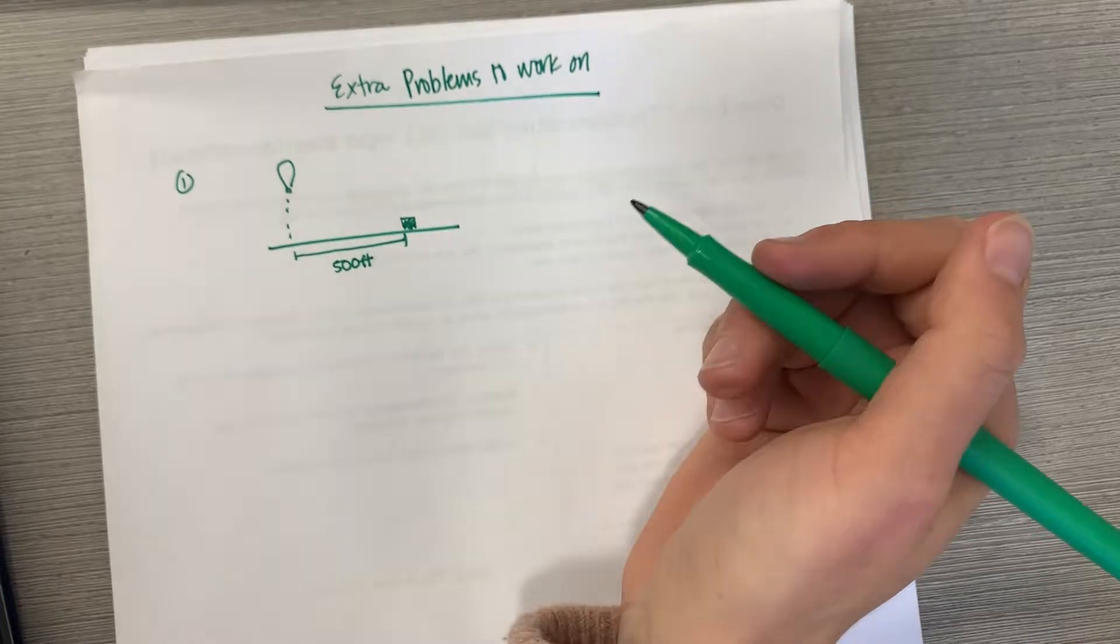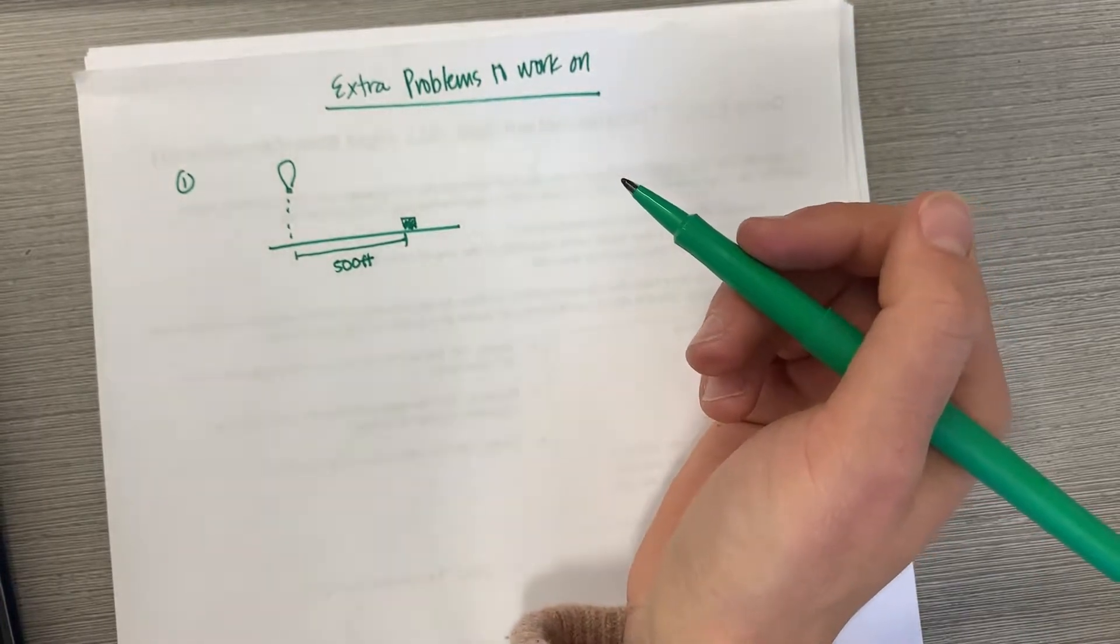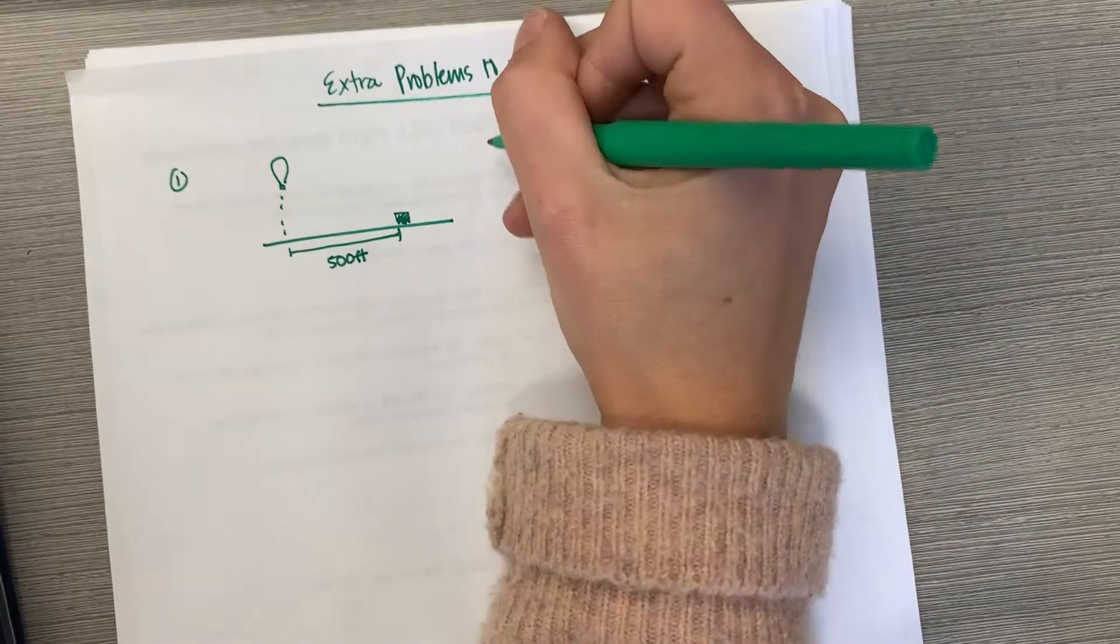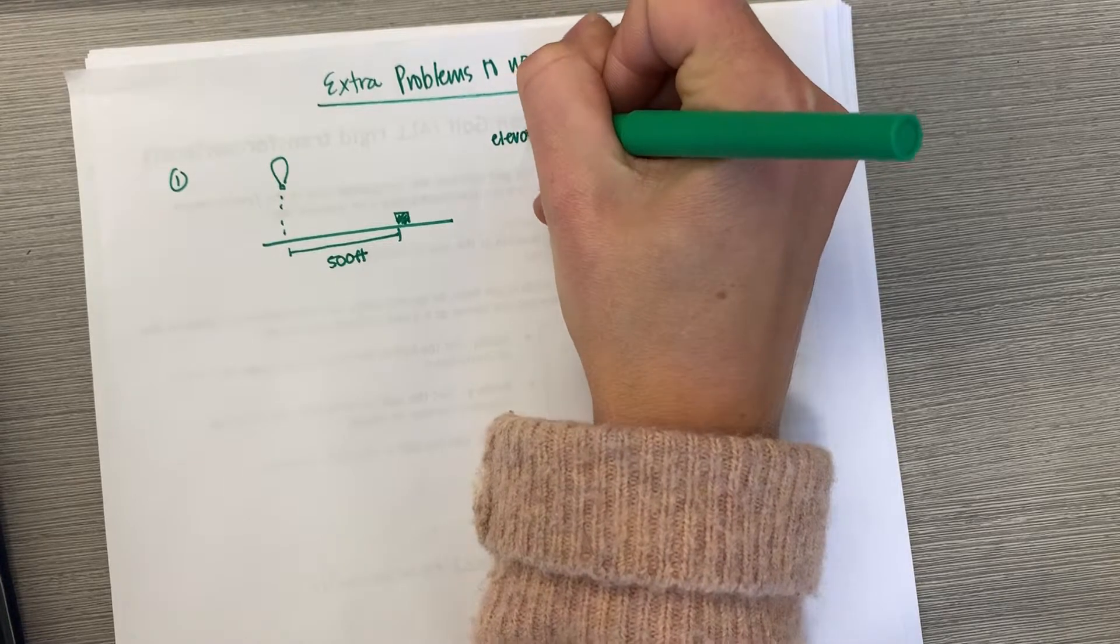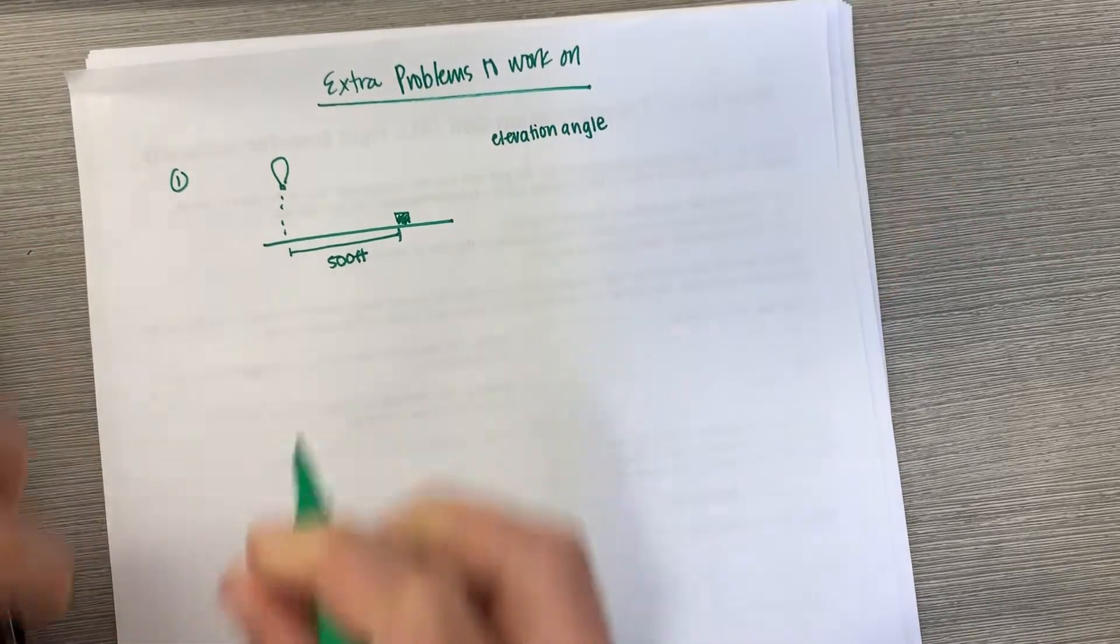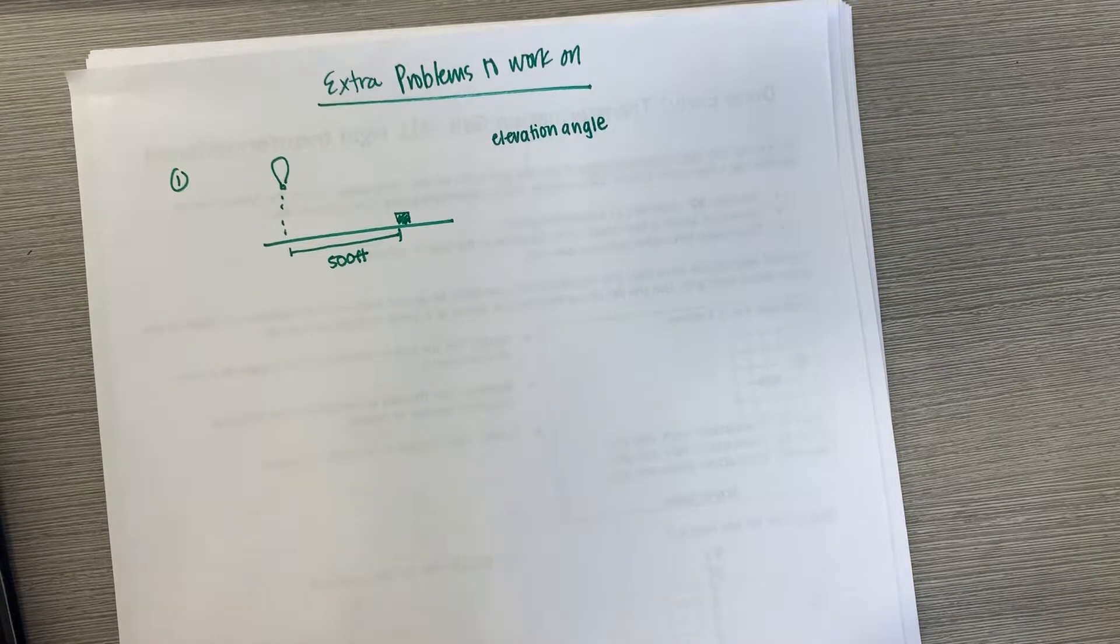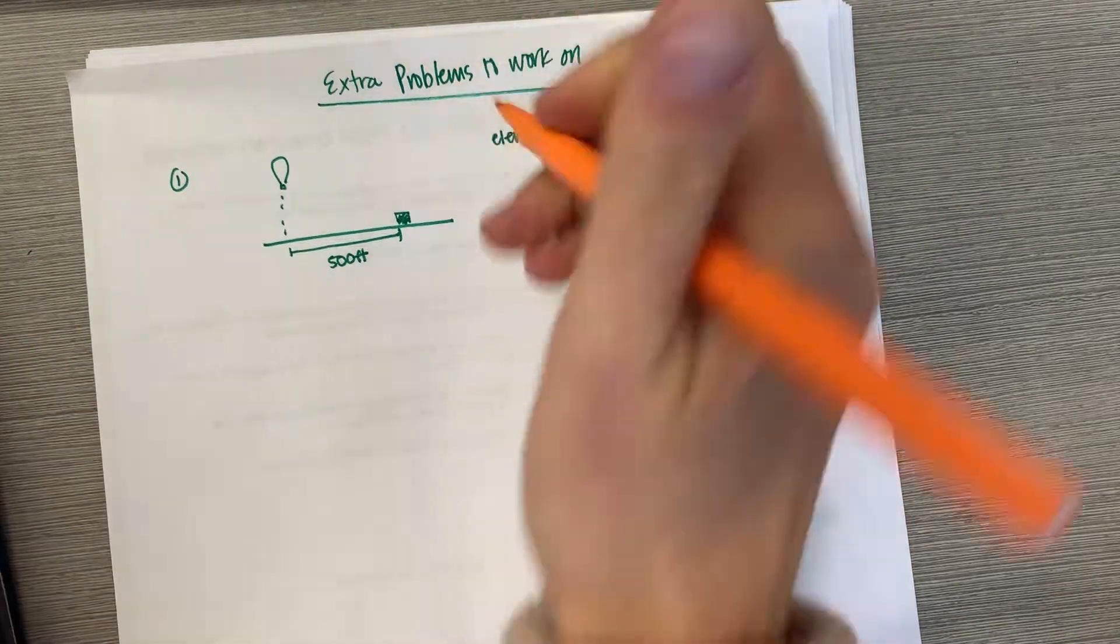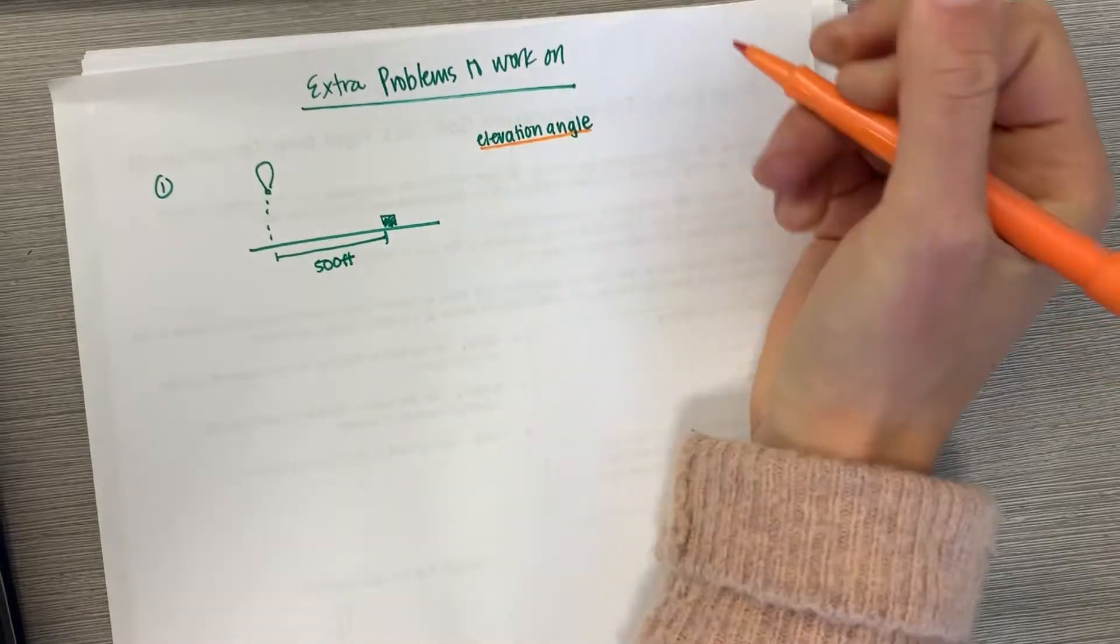At the moment the rangefinder's elevation angle is pi fourth radians. Okay here it says elevation angle. This is a really important part and it might have been where you were getting stuck a little bit. Elevation angle.